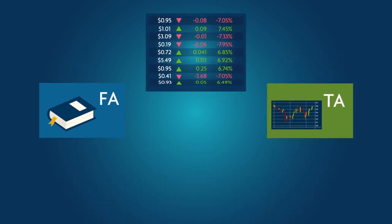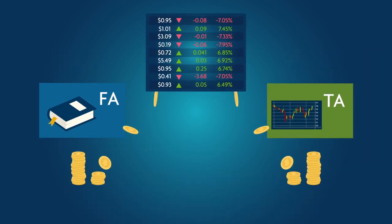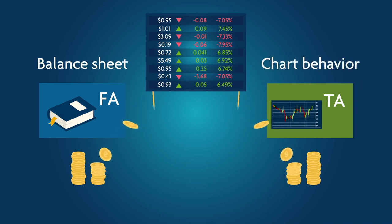The essence of the dispute is whether to buy a stock based on company and market performance, such as the company's balance sheet, or based on the stock's behavior as illustrated by the chart alone.